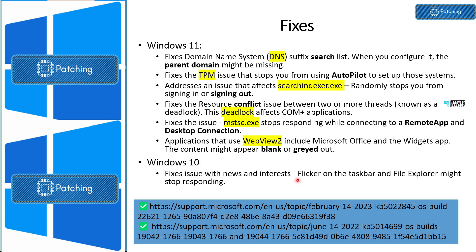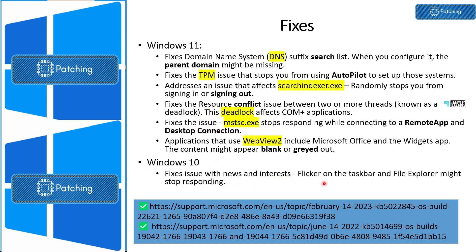For Windows 10 fixes, there is a flickering issue on the taskbar and Windows Explorer with the News and Interests feature that is fixed by Microsoft with February patches. You can pause the video and check out the details of these fixes, and refer to the links shown for more details.